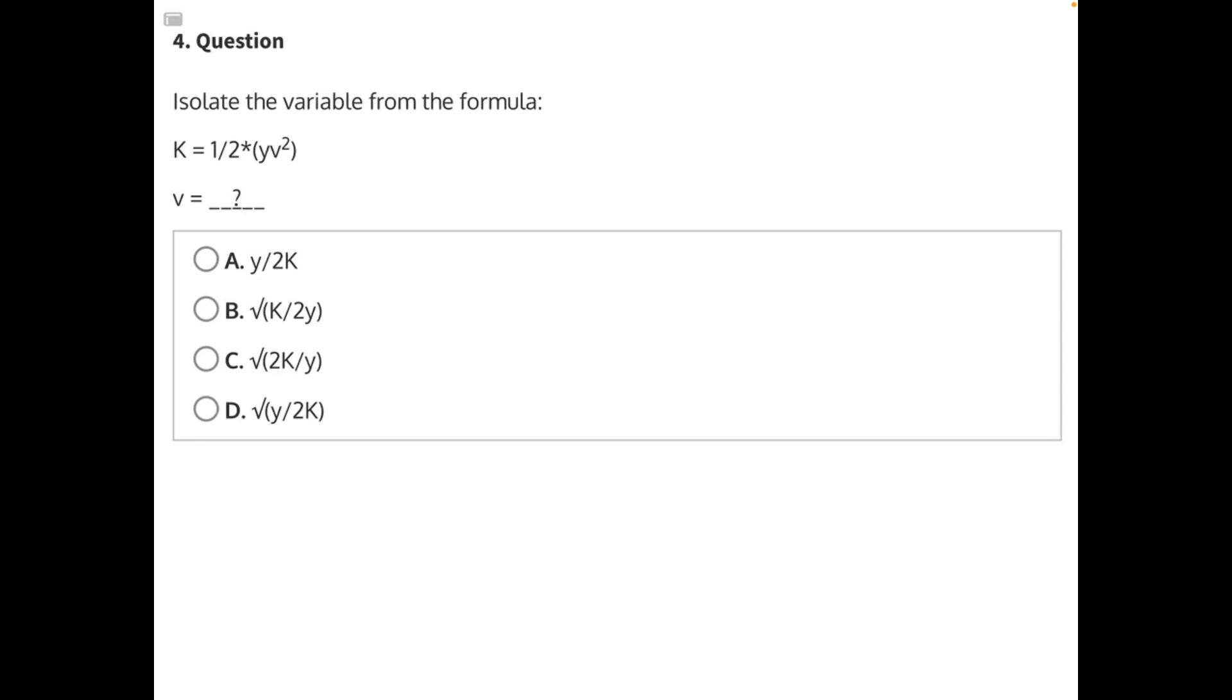Isolate the variable from the formula. In order to do this, we need to take everything that's not the variable we're trying to isolate, v, and move it over to the other side of the equal sign, including this exponent right here.